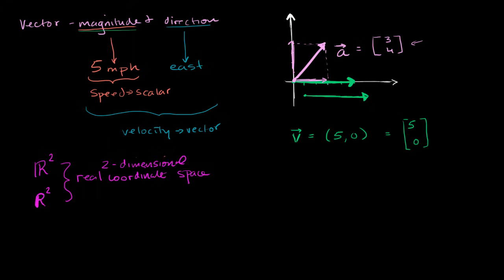And just to break down the notation, the two tells us how many dimensions we're dealing with. And then the R tells us this is a real coordinate space. The two-dimensional real coordinate space is all the possible real valued two-tuples.